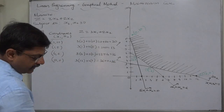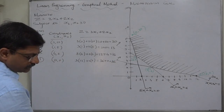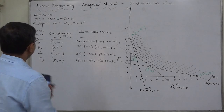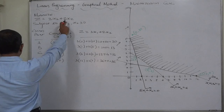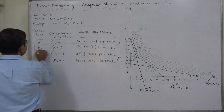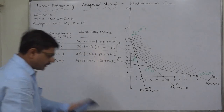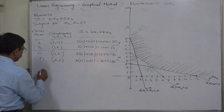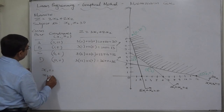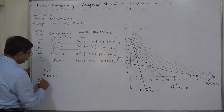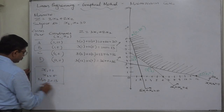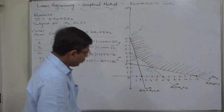Since the objective is minimization, we look for the minimum value of Z. The minimum value of Z is 13, achieved at point B with coordinates (1, 5). Therefore x1 equals 1, x2 equals 5, and minimum Z equals 13 is the optimal solution of the linear programming problem.